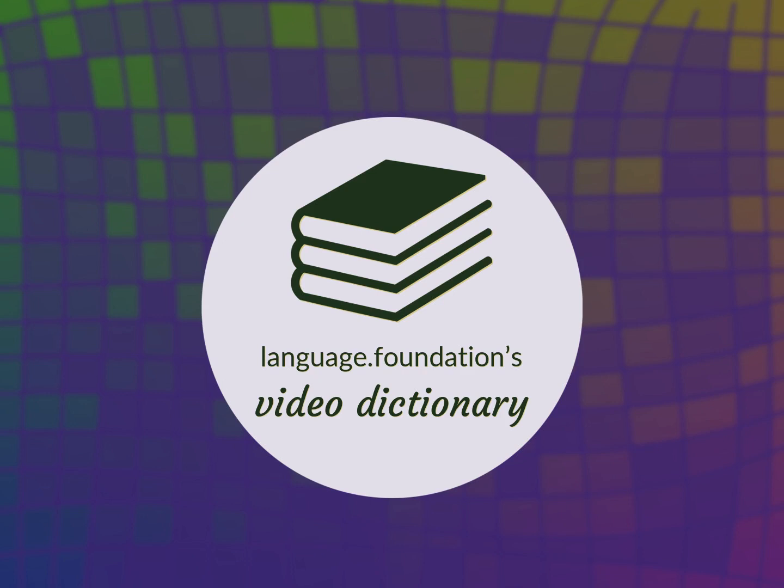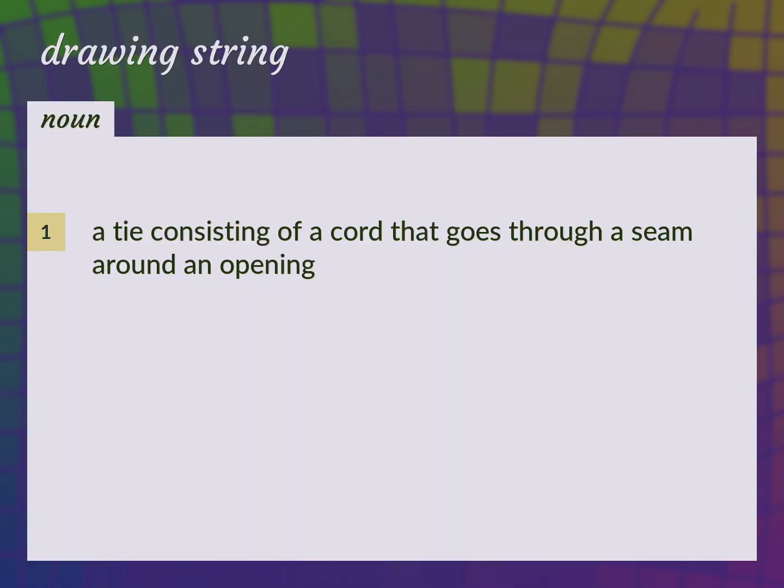Language.Foundation's Video Dictionary, helping you achieve understanding. Drawstring: a tie consisting of a cord that goes through a seam around an opening.